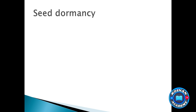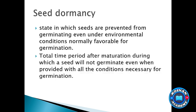Today we are going to start seed dormancy. Seed dormancy is a state in which a mature seed will not germinate even though all the necessary conditions for germination are available. It is a state in which a seed will not germinate even though it has all the necessary conditions required.